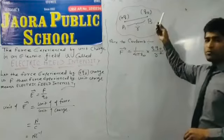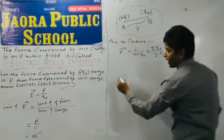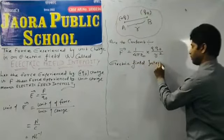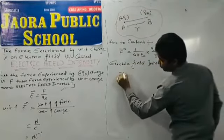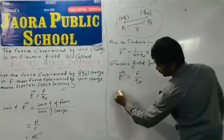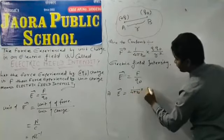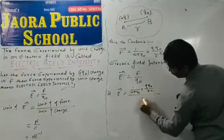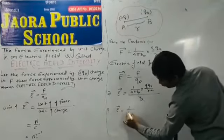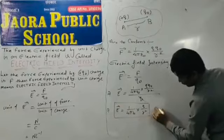So, the force experienced by q naught is 1 upon 4 pi epsilon naught q q naught upon r square. So, electric field intensity E is equal to, by definition, E is equal to F upon q naught. So, E is equal to, put the value of F, 1 upon 4 pi epsilon naught q q naught upon r square, both upon q naught. Q naught to q naught, cancel. So, E is equal to 1 upon 4 pi epsilon naught q upon r square. Newton per coulomb.